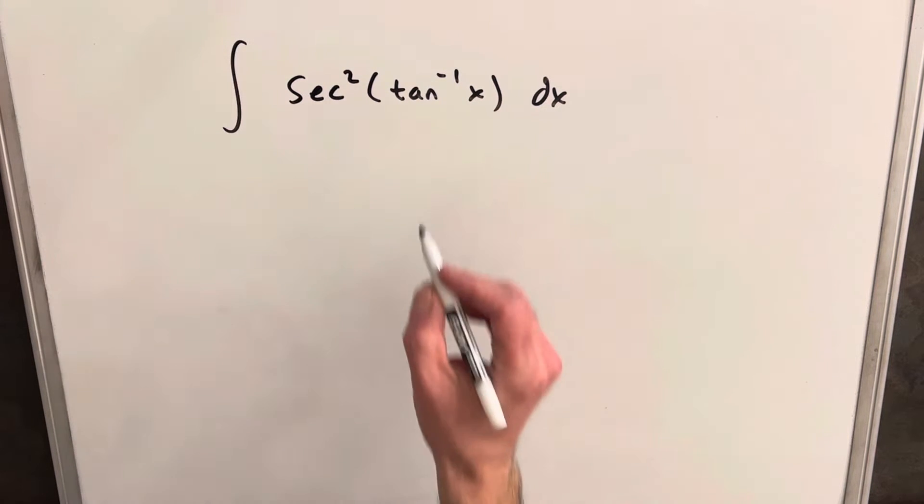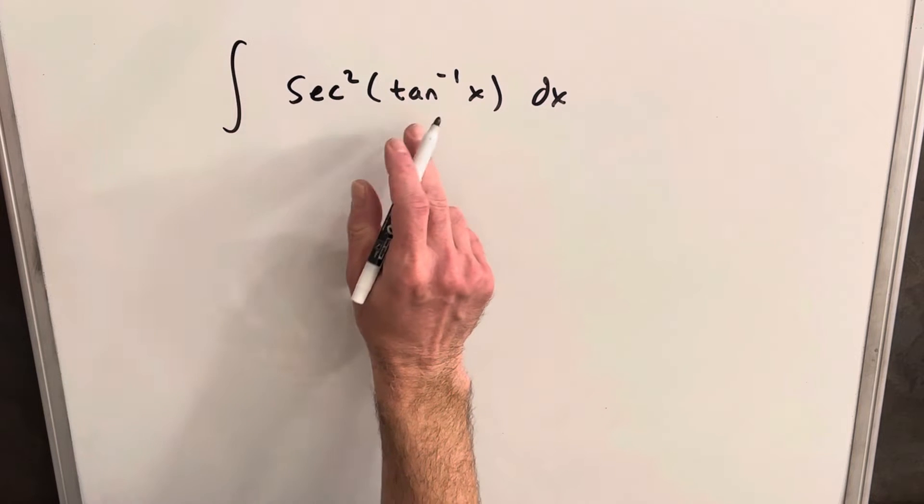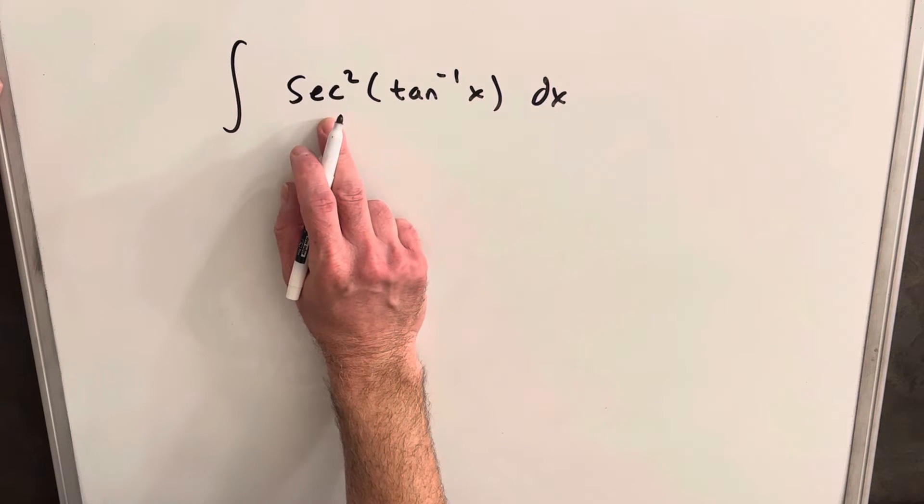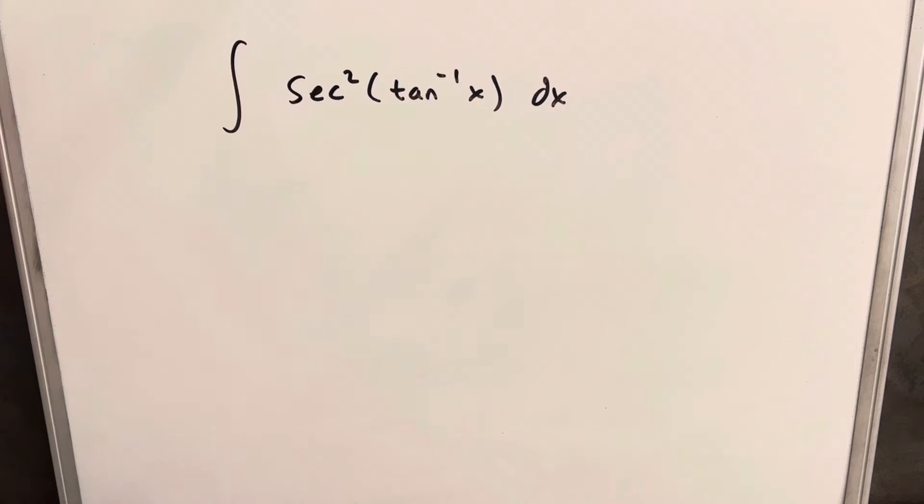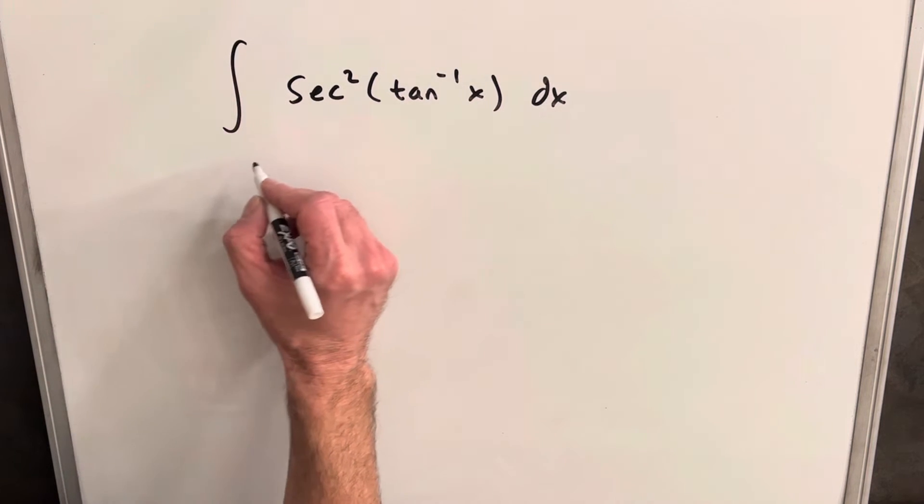What I want to do is we'll try a u-substitution, because if we could get this, obviously we know how to integrate secant squared of u, but when we do the u-substitution we're going to have something else. So let's see what happens here when we do this.